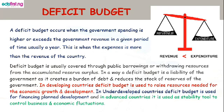Deficit budget: a deficit budget occurs when the government spending is higher and exceeds the government revenue in a given period of time, usually a year. This is when expenses are more than the revenue of the country. Deficit budget is usually covered through public borrowings or withdrawing resources from the accumulated reserve surplus. In a way, a deficit budget is a liability of the government as it creates a burden of debts and reduces the stock of reserves.